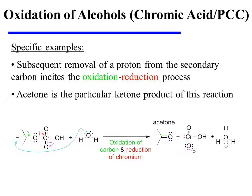As this occurs, the oxygen-chromium bond fragments and pi electrons are displaced onto oxygen. Notice that this reaction product is a ketone because a secondary alcohol was used as the substrate.